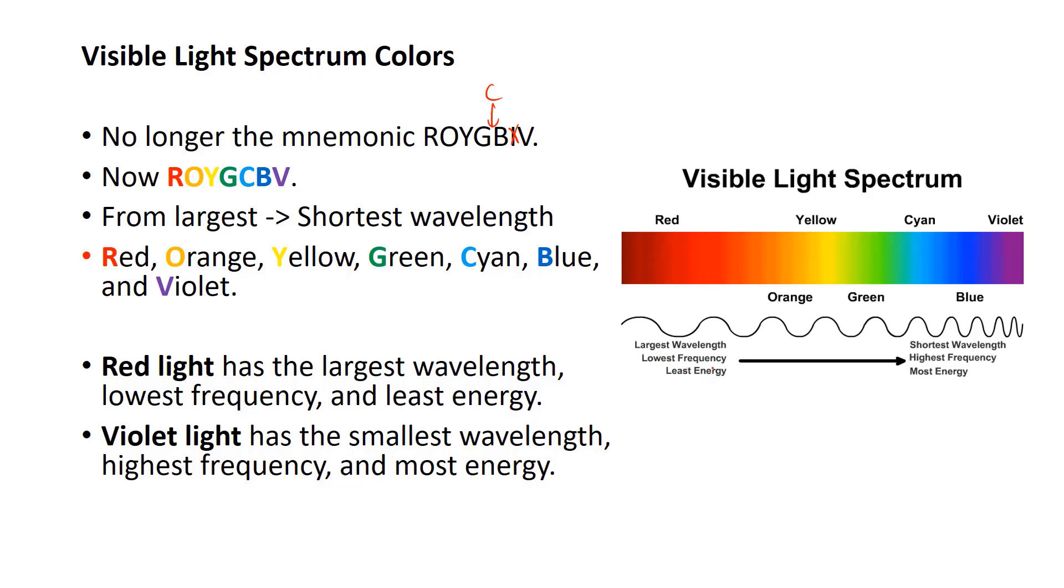So along with this light spectrum and this drawing, red light has the largest wavelength, lowest frequency, and least energy. Violet light has the smallest wavelength, highest frequency, most energy. And everything in between, you just kind of go with ROYGCBV and what you see, the little wave here. I'll show you how to use it in a second.